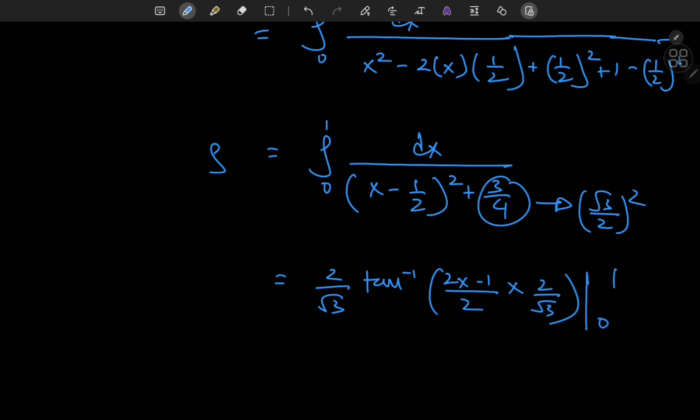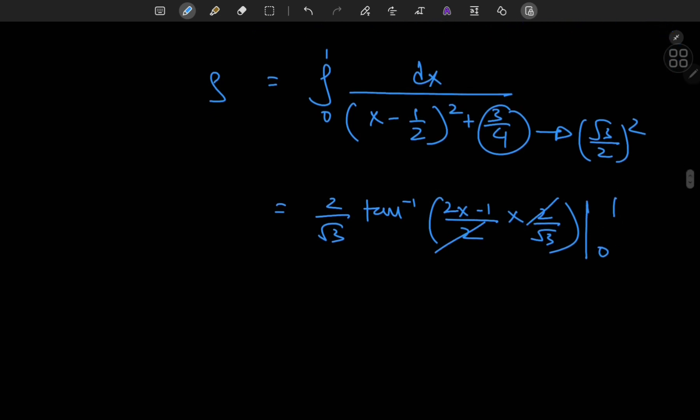And I need a 2 by root 3 here as well, with the limits being 0 and 1. So the 2's cancel out. I'm left with 2 by root 3 times inverse tangent.